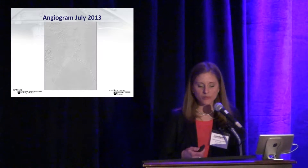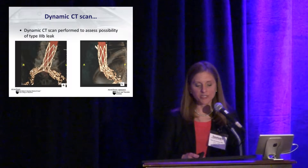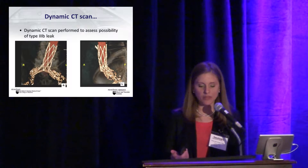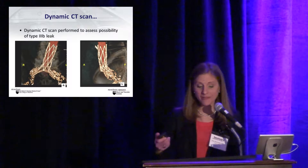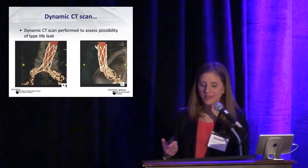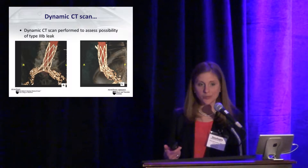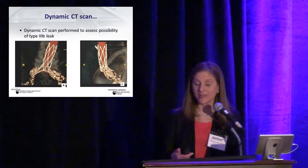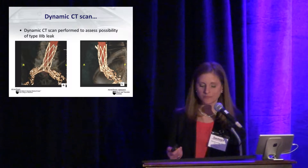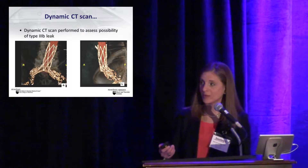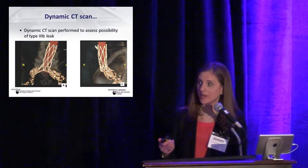Knowing that type 3b endoleaks are quite rare, we chose to proceed with a dynamic CT scan to confirm what we were truly dealing with. The AP image shows IV contrast exiting the graft as a jet, which was unlikely to represent simply the fabric billowing out from the stent. The lateral view essentially shows the same type 3b endoleak.